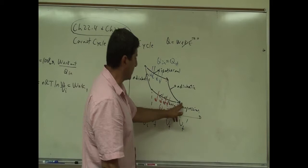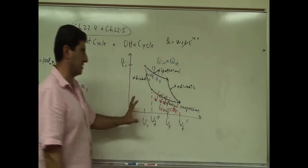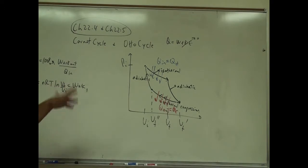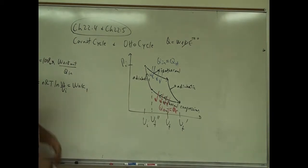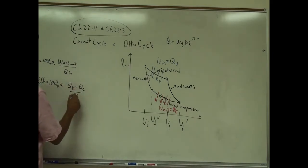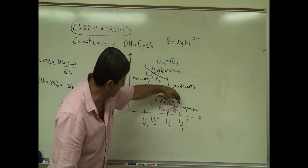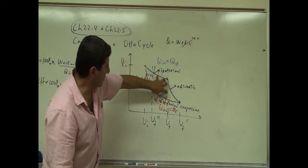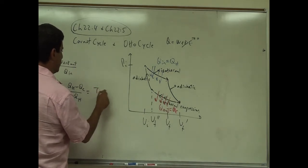In the second stage the gas also does work; in the third and fourth stages it does negative work. If you add up all these works — taking the area under the graph for each stage, adding or subtracting as appropriate, and dividing by Q in — it can be proven that the efficiency equals (T hot minus T cold) over T hot.